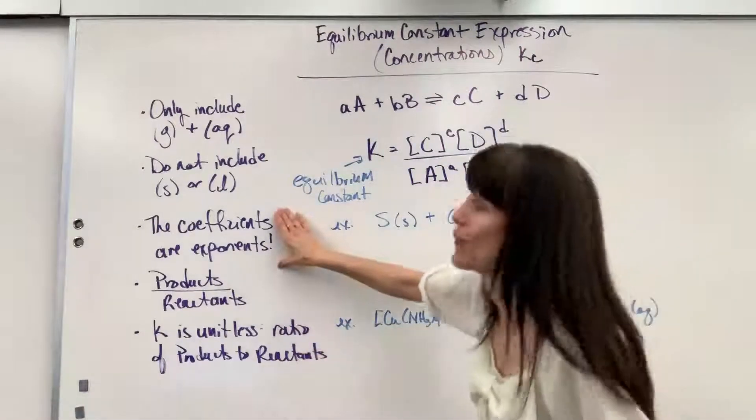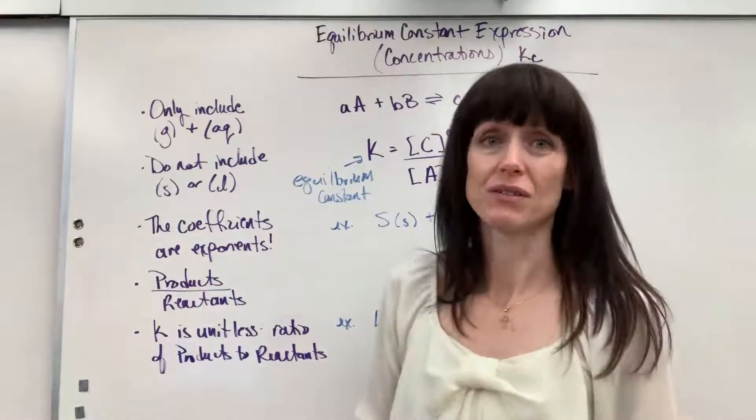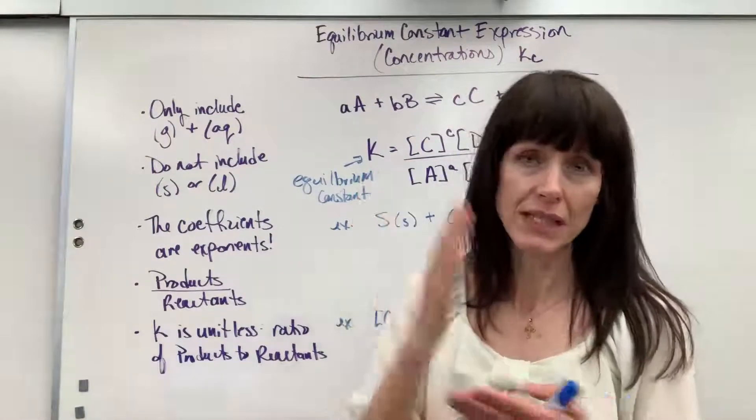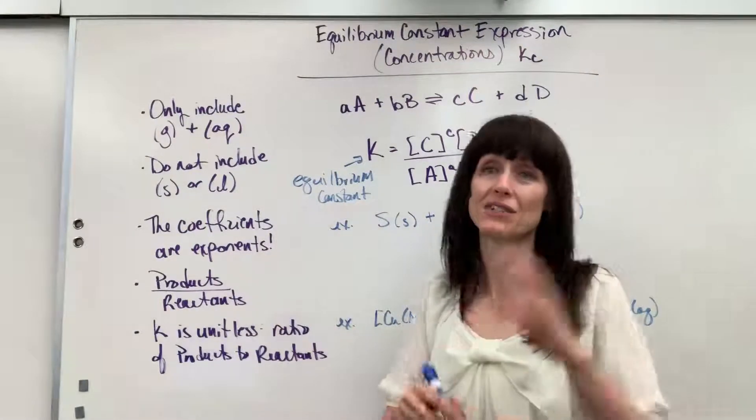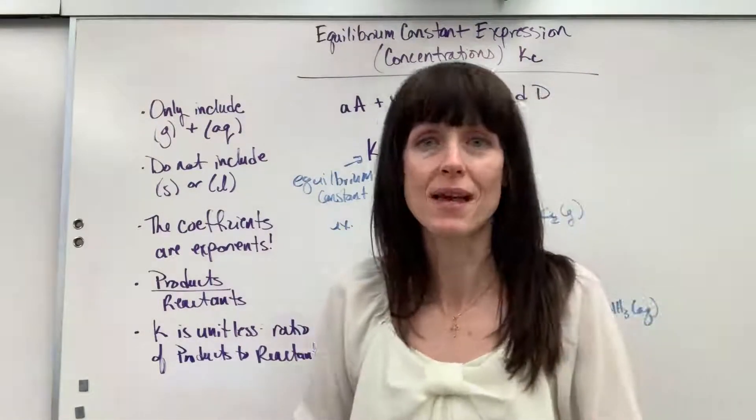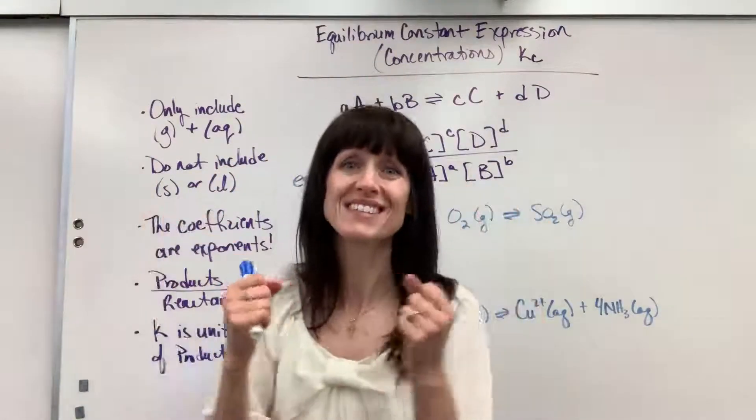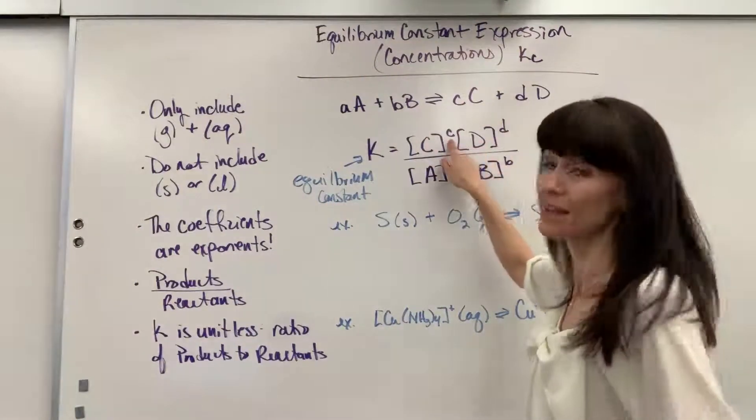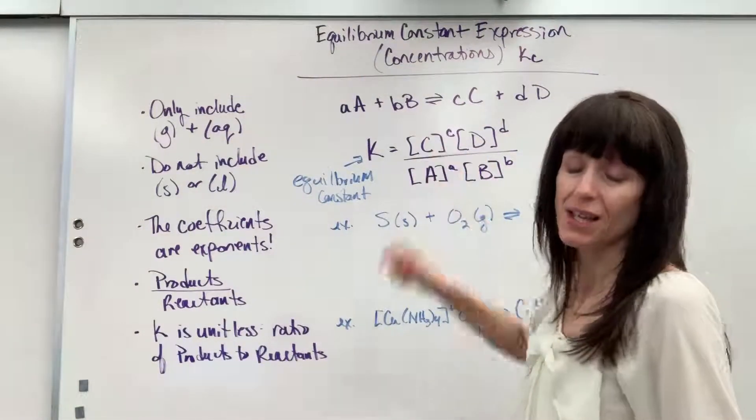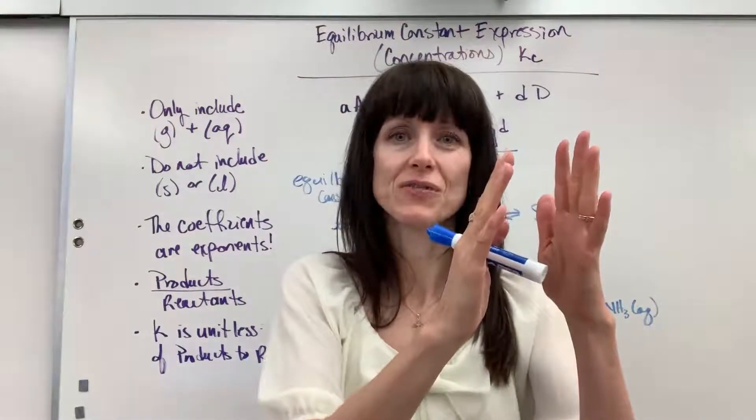Next, the coefficients are the exponents. So you have maybe just finished your rate unit, and your teacher drilled, hey, you can't use the coefficients as exponents. We had to find m and n, the orders. Now, we step into equilibrium like, woohoo, this is so much easier. You just look at the coefficient, and that becomes the exponent.